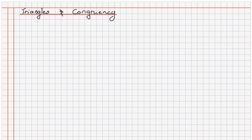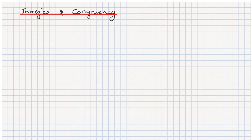For this video, please follow along and write the notes in your book as they're presented on this OneNote paper, so you have some beautiful notes to reference when you're doing the problems later in the chapter. Now the first part we're going to look at is the fundamentals of a triangle. A triangle itself is a three-sided shape with three vertices.